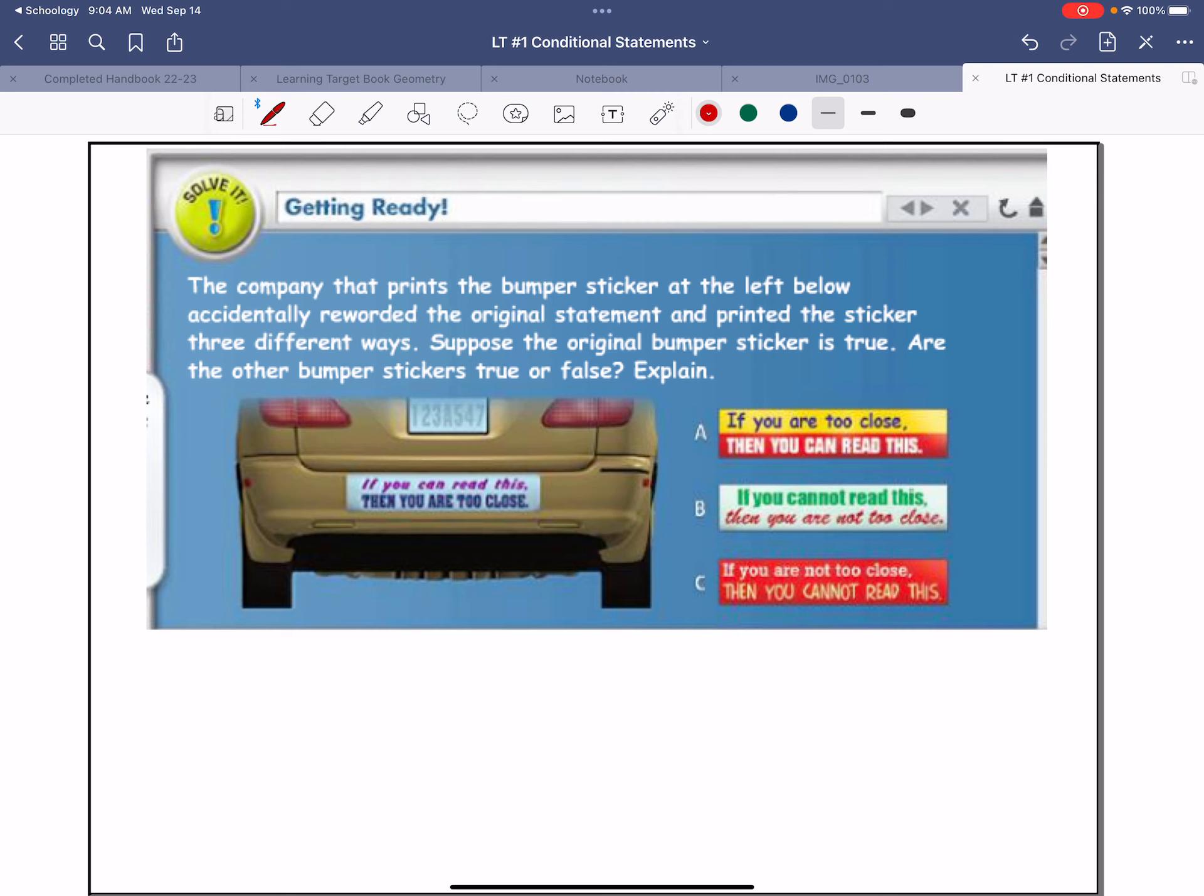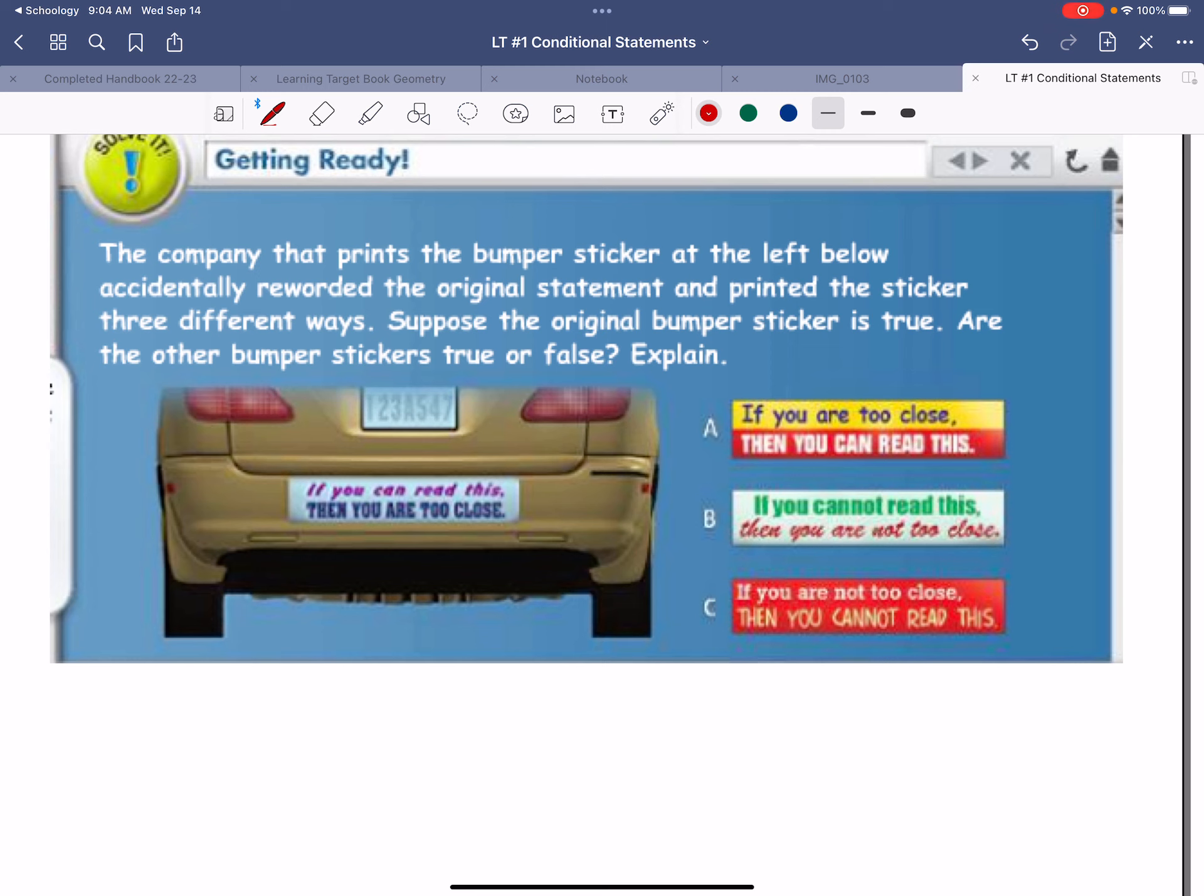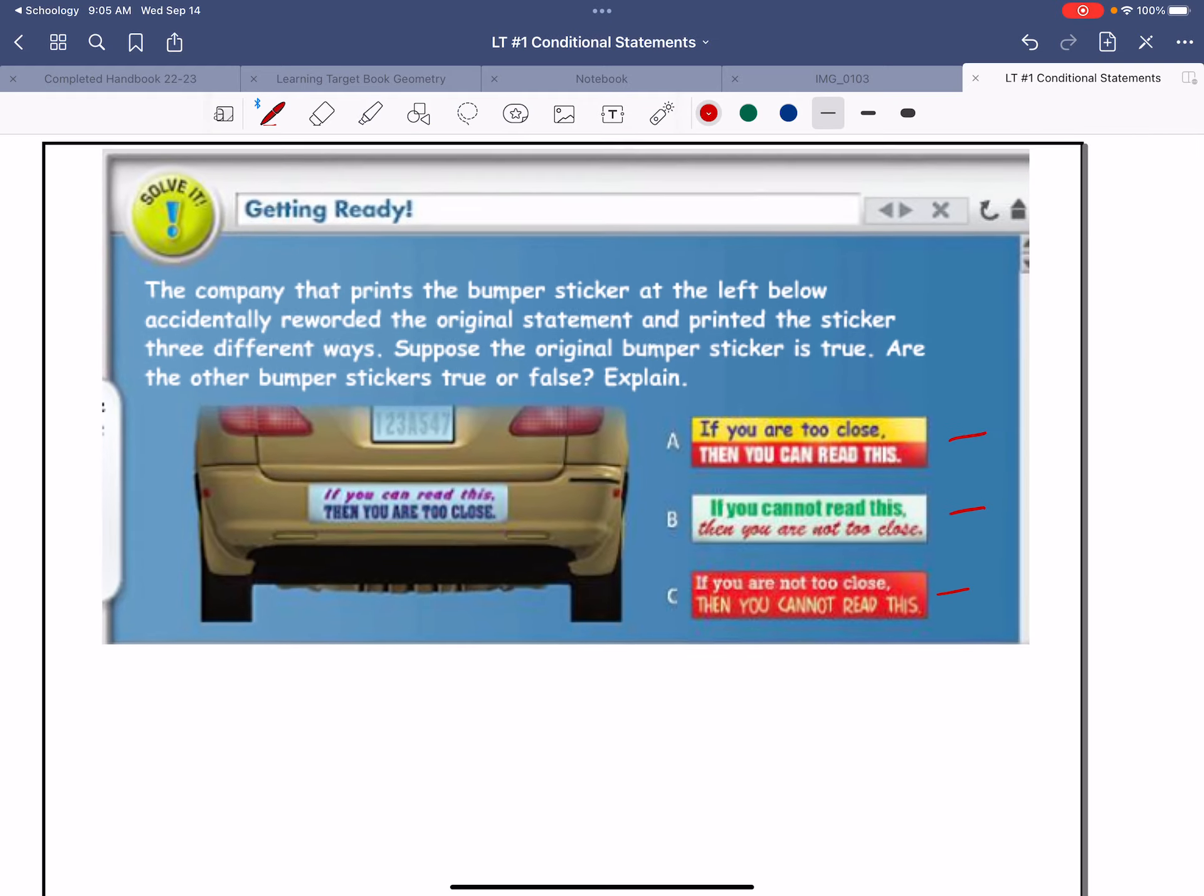You might have seen the bumper sticker: if you can read this, then you are too close. Well, you can rephrase this bumper sticker many different ways. Like, if you are too close, then you can read this. If you cannot read this, then you are not too close. If you are not too close, then you cannot read this. So what we're going to learn about now are these different ways to write these conditional statements.